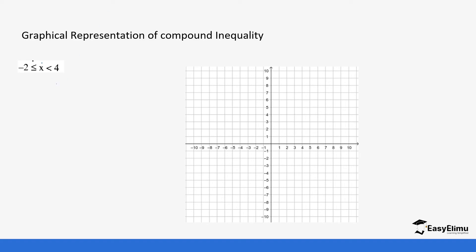The values of x are going to be between negative two and four, and negative two is part of it. So we start with x is greater than or equal to negative two — this happens on the x-axis. Since it is less than or equal, the line is going to be bolded. You draw and bold that line using your ruler.